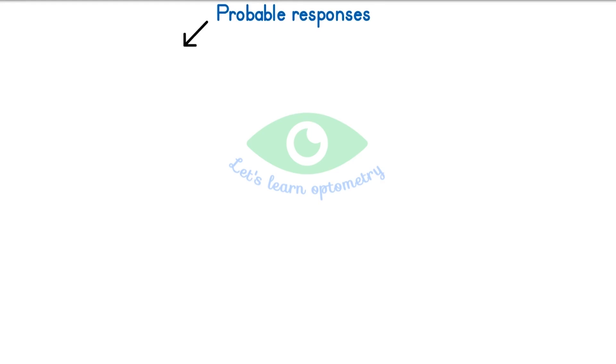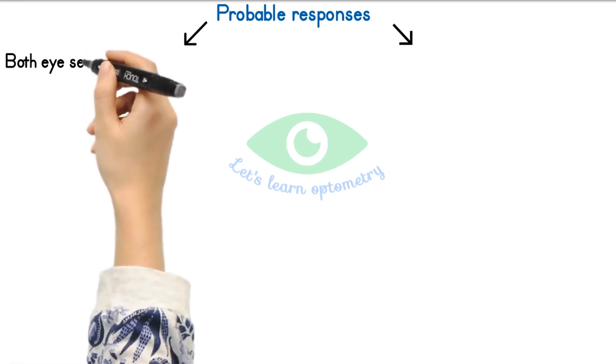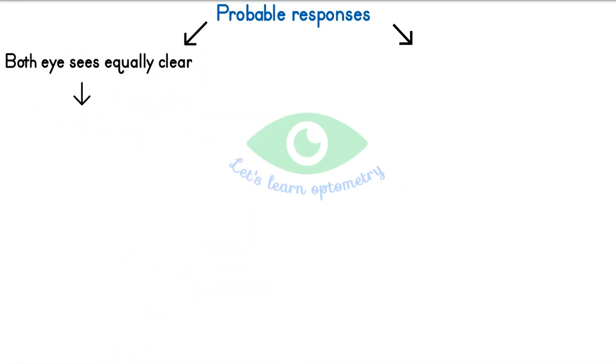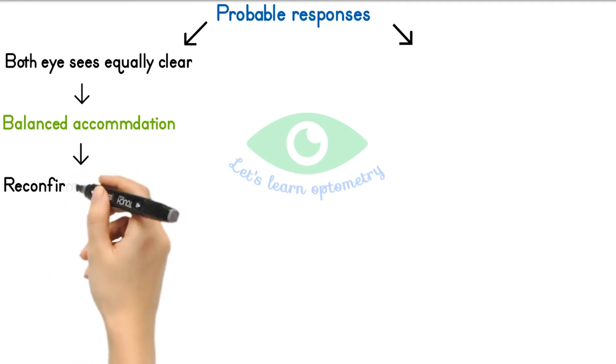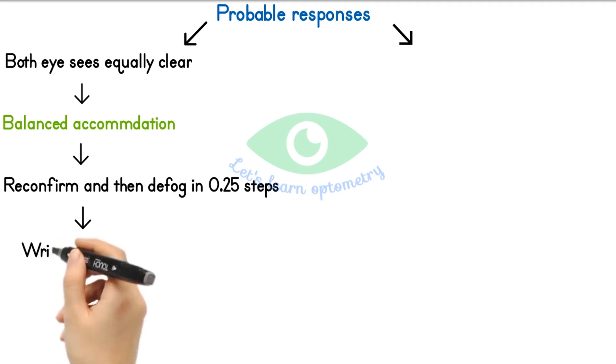Let's see the probable responses from the patient. They may say both eyes see the target equally clear. It means the accommodation is already balanced. In order to confirm that, add plus 0.25 spherical before both eyes and repeat the test. If balance is correct, both eyes will lose equal amount of clarity. Now both eyes are in perfect balance. Then we can defog both eyes at the same time in 0.25 steps until reaching their BCVA and we can write the final prescription.